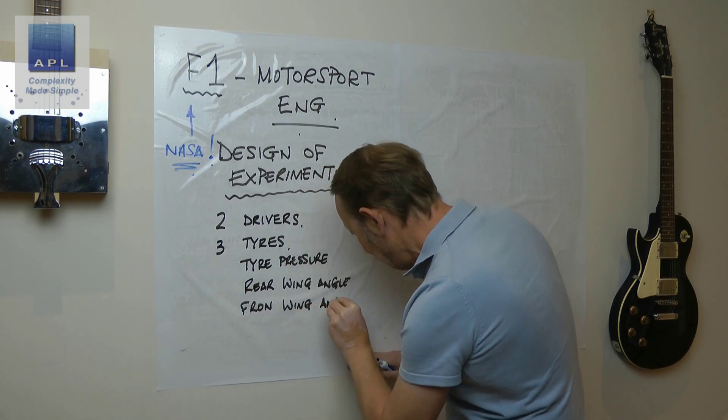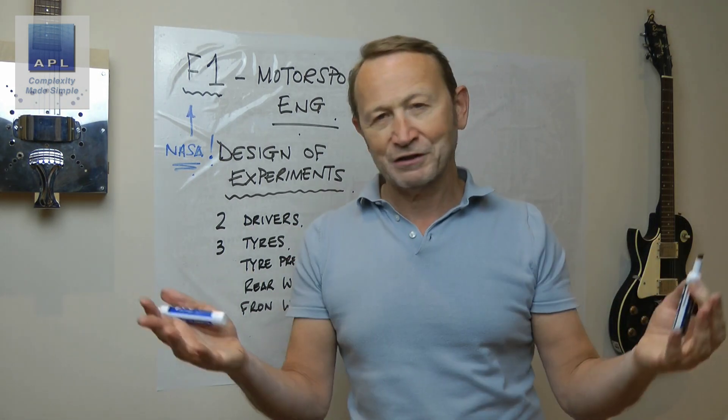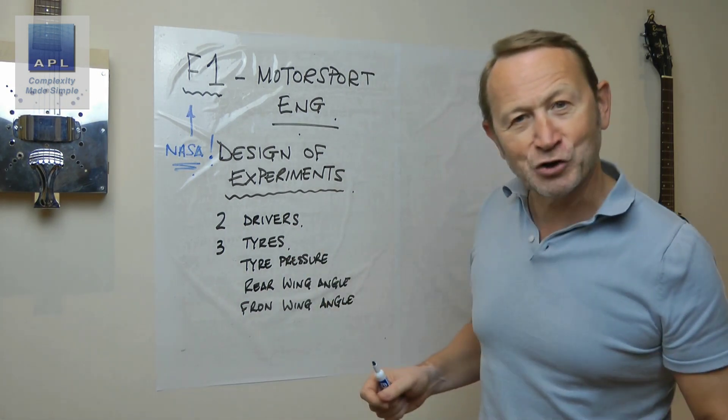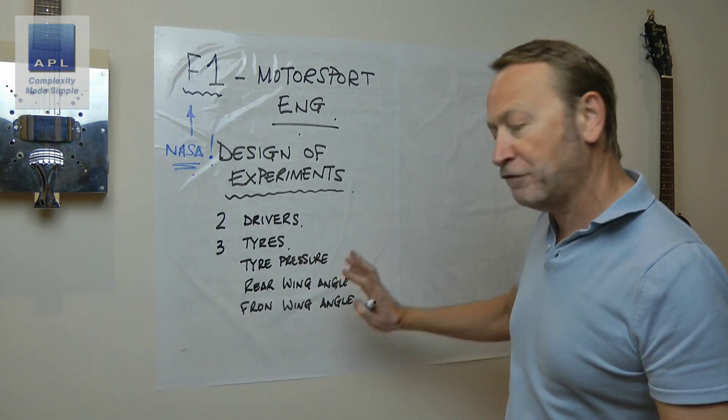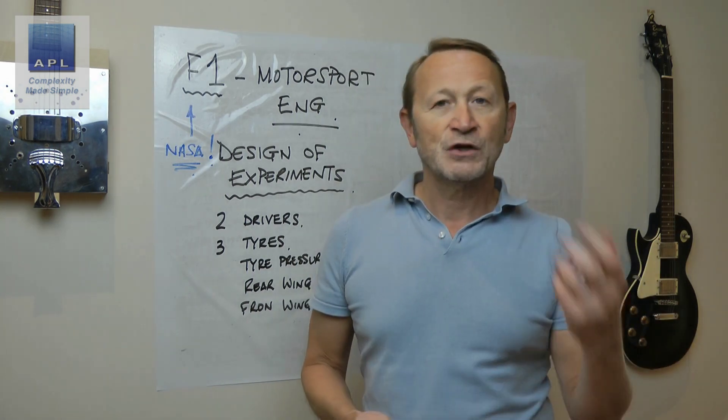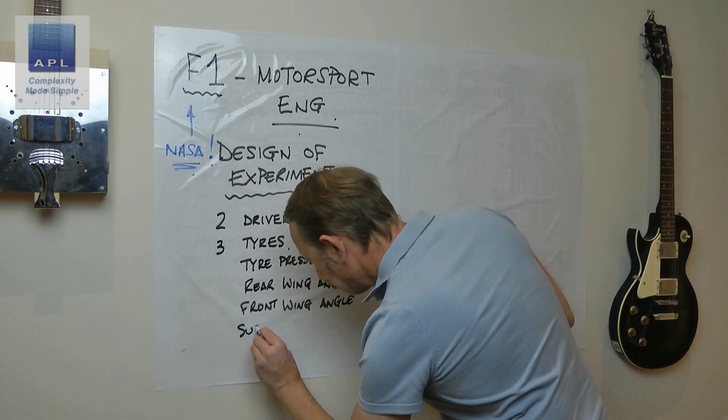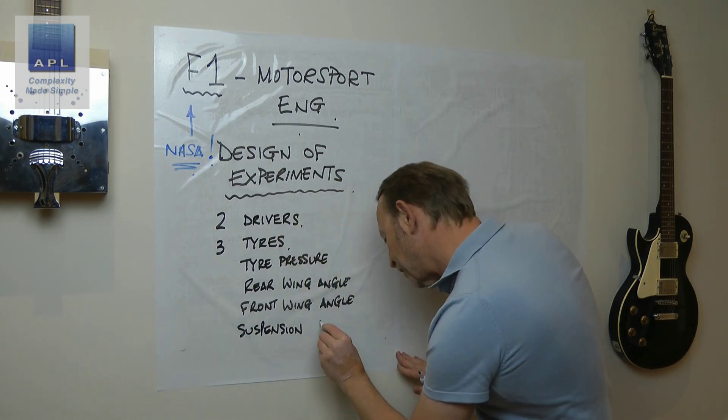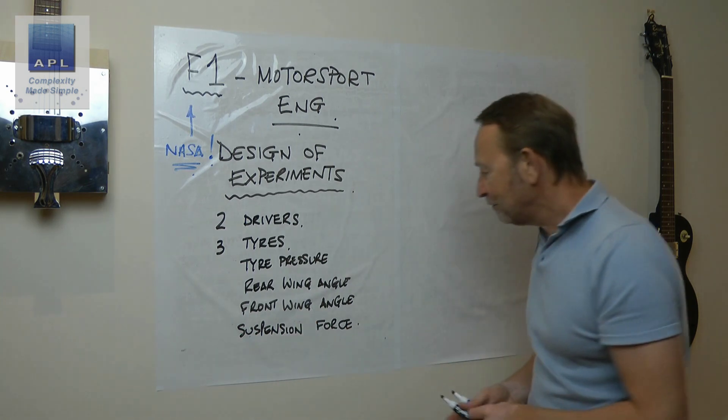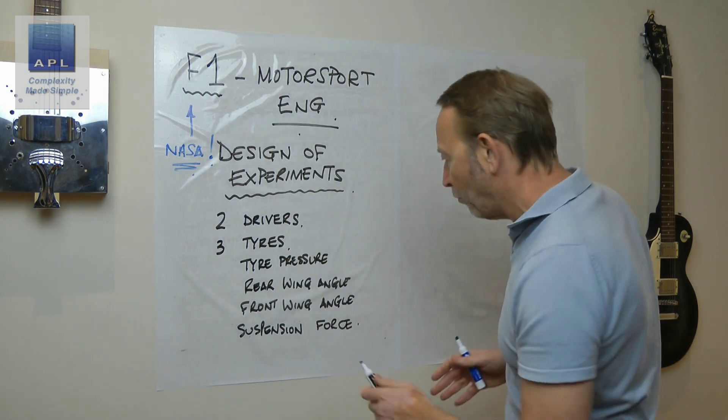You've got the front wing angle. By the way, I'm guessing these variables. I don't expect to get all these right, so you can think of your own variables that you're twiddling about with on your car every weekend. So we've got one, two, three, four, five so far. What else might we have? Suspension settings. I'm going to call it suspension force, could be suspension height.